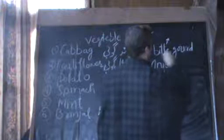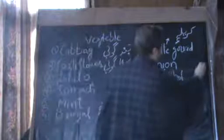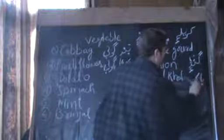Bitter gourd — we call it 'Karel' in Kashmiri. In Urdu we call it 'Karela.' Then onion — we call it 'Gandh.' And nolkhol is a very famous vegetable in Kashmir — it is called 'Haak.' Then we have corn.